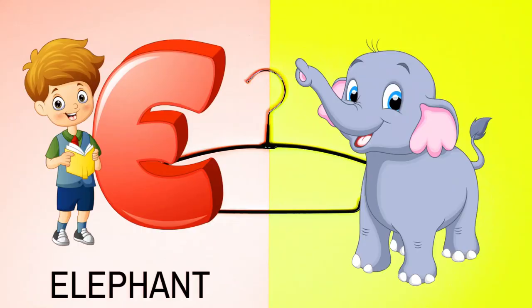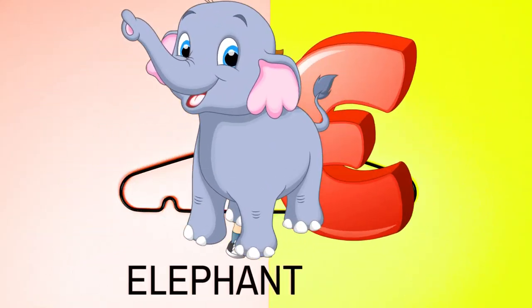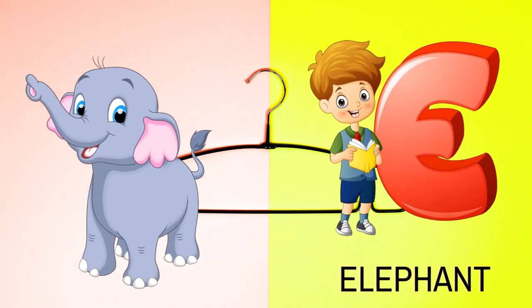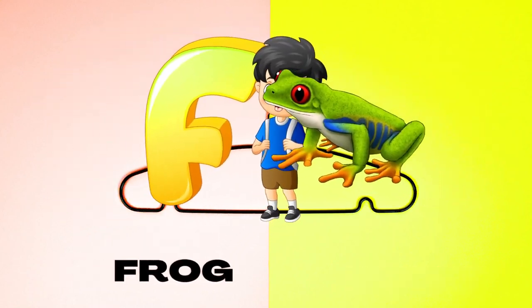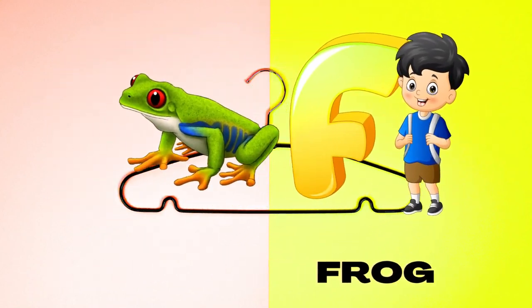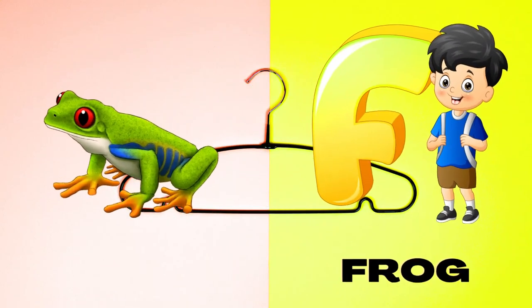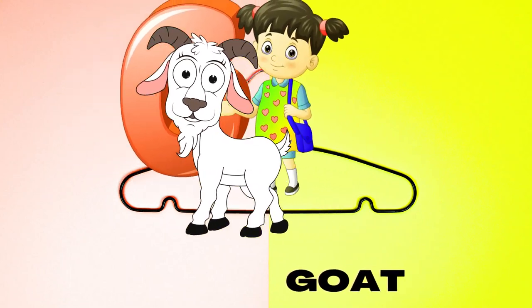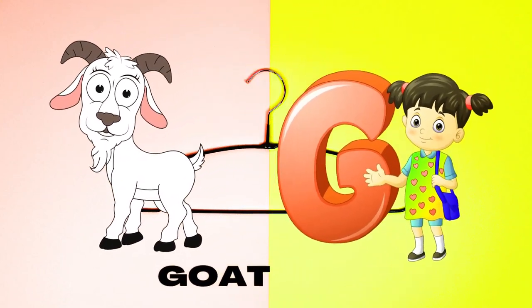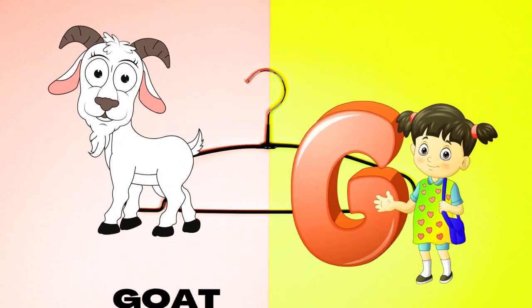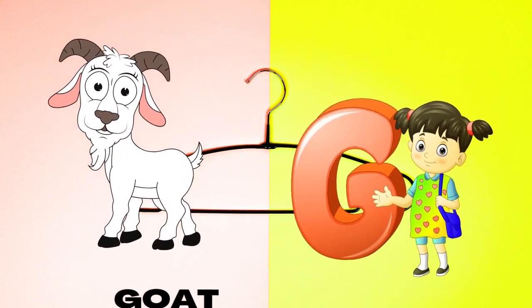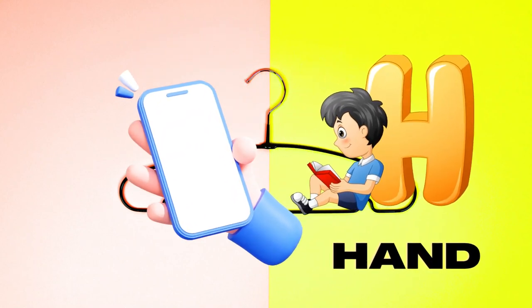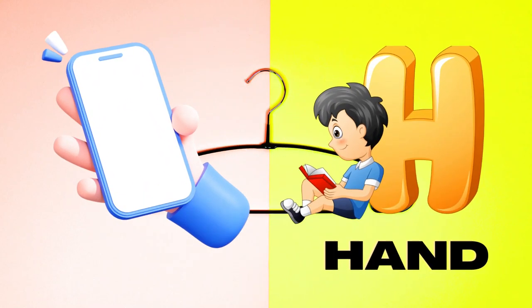E is for Elephant, E-E-Elephant. F is for Frog, F-F-Frog. G is for Goat, G-G-Goat. H is for Hand, H-H-Hand.